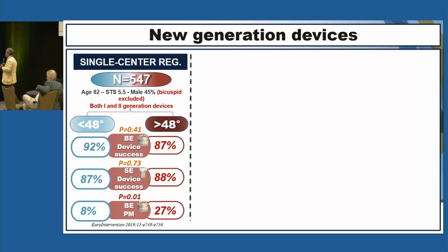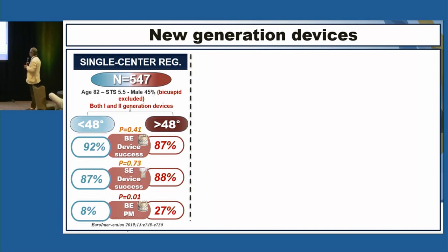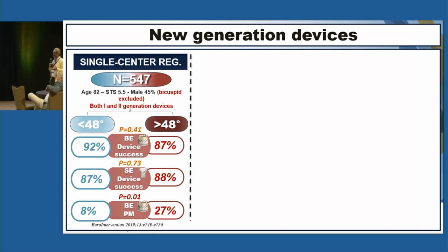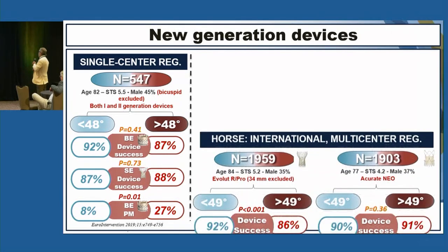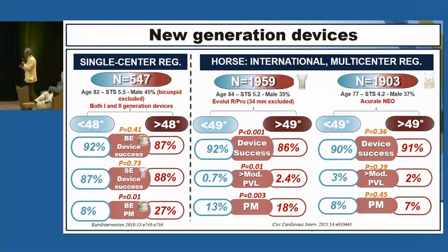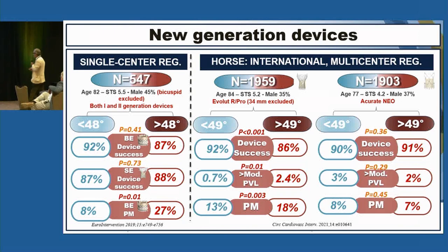Single center, 550 patients, including both first- and second-generation devices. The authors failed to find an interaction between device type and device success for either Edwards Sapien or CoreValve family. But, strangely, there is an increase in pacemaker rate with balloon-expandable valves. Looking at the HORSE International Multicenter Registry — 2,000 patients per two sub-studies, one with the CoreValve family and the other with Acurate — you can see the interplay between horizontal aorta and the CoreValve family in terms of device success, PVL, and pacemaker rate, which were higher for horizontal aorta. This was not true for the Acurate NEO.